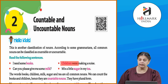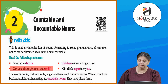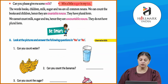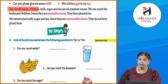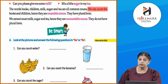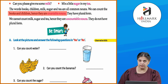Children were making a noise. Can you please give me some milk? Mix a little sugar in my tea. Toh bachcho the words books, children, milk, sugar, and tea — ye sab kya hain? Common nouns. Dekho, pink mein likhe hue highlighted kiye hue wo words — we can count the books and children, hence they are countable nouns.